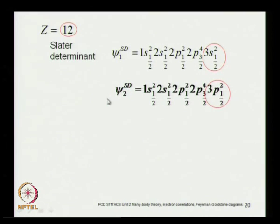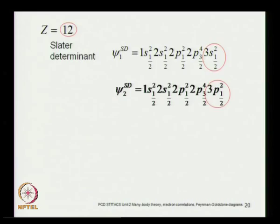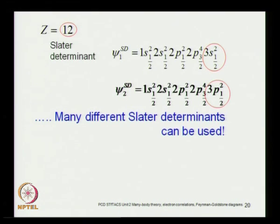Instead of 3s², the 11th and 12th electrons could go into 3p instead. This is also the magnesium atom — same nucleus, same number of protons, neutrons, and electrons — but the configuration is different. If you write a Slater determinant for the first configuration and compare it with the Slater determinant for the second configuration, the two Slater determinants must be different from each other. Each Slater determinant corresponds to a particular configuration — there is a one-to-one correspondence. You can have two electrons in 3p₃/₂, or 3d₃/₂, or 4s, or 5p — really an infinite number of possible Slater determinants.